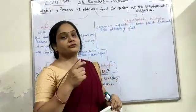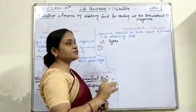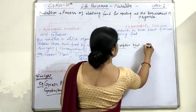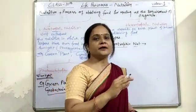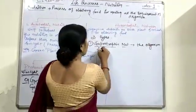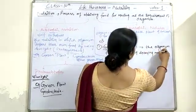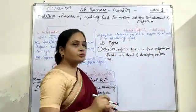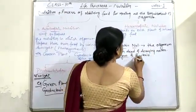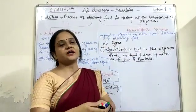Heterotrophic nutrition is further classified into three subtypes. The first is saprotrophic nutrition, which means the organism feeds on dead and decaying matter. Examples of saprotrophic organisms are fungi and bacteria.